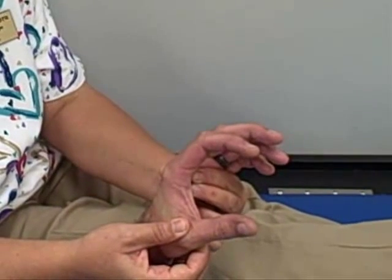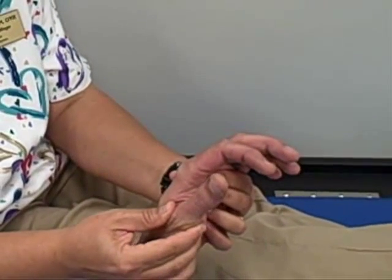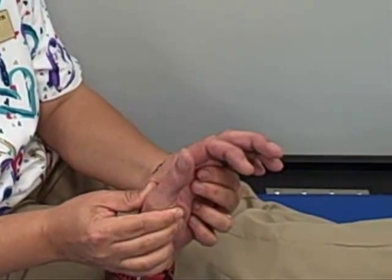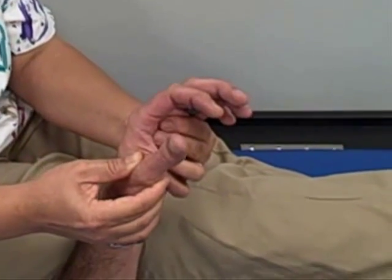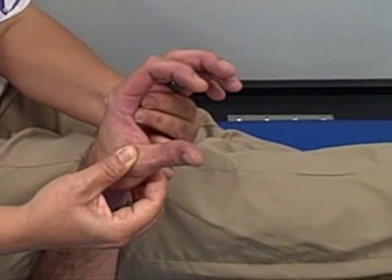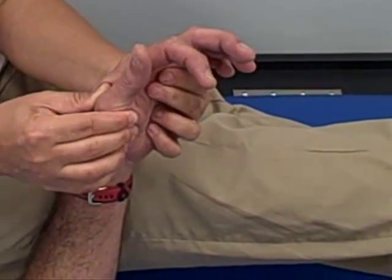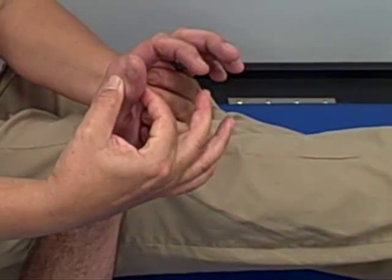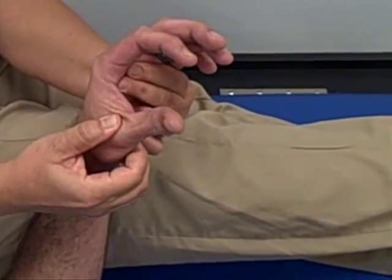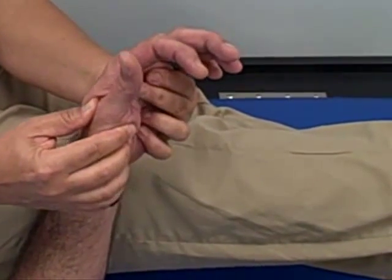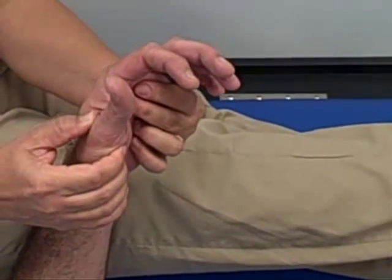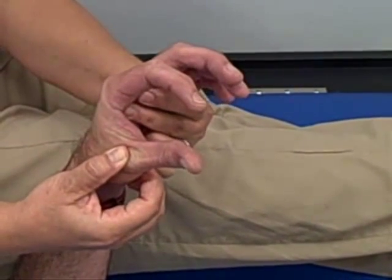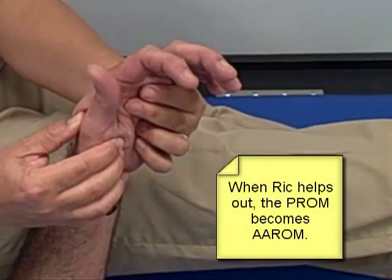So I'm starting out with abduction, coming back to adduction, and you'll notice that I'm either at the metacarpophalangeal joint or below it in the way I'm moving. I'm not going to try to move out here. Abduction and adduction. Can you help me out, Rick? I'm going to pull it back for adduction.